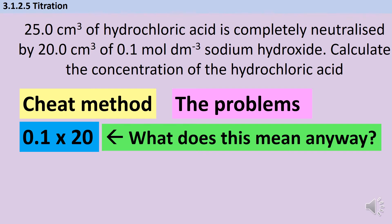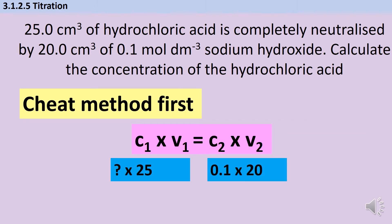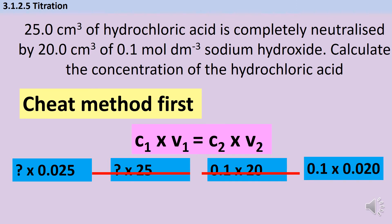Thankfully, this one is quite easily solved. When I do concentration times volume, instead of doing times 25 and times 20, I should make those volumes be in dm³. So if I do unknown concentration times 0.025 and 0.1 times 0.020, then the answers that I get will actually be the number of moles of each chemical in solution. That's a real number, and it's something that my examiner can give me credit for.